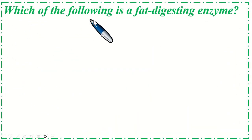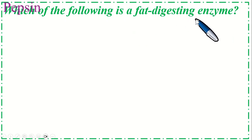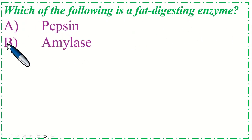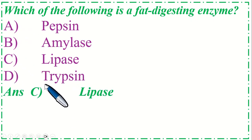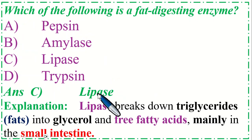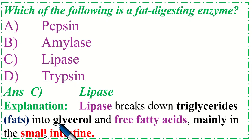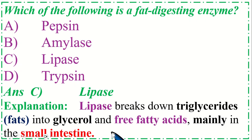Which of the following is a fat-digesting enzyme? Option A: Pepsin, B: Amylase, C: Lipase, and Option D: Trypsin. The correct option is C, Lipase. Lipase breaks down triglyceride fats into glycerol and free fatty acids, mainly in the small intestine.